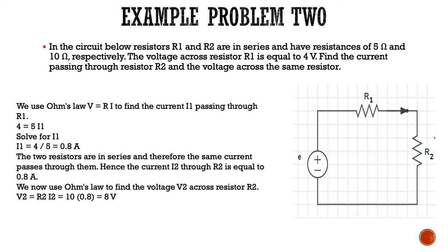Now we're going to get to the solution. To start off, we're going to use Ohm's law, V equals IR, to find the current I1 passing through the first resistor. We simply plug into Ohm's equation and get 4 equals 5I1. We only have one variable, so solving for I1, we get four-fifths, or 0.8 amps. These two resistors are in series, so the same current passes through them. The current through this entire circuit is 0.8 amps.